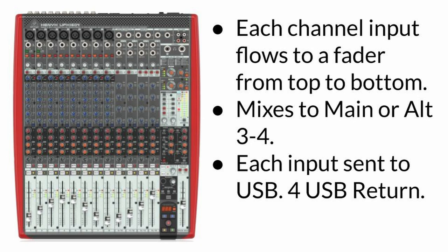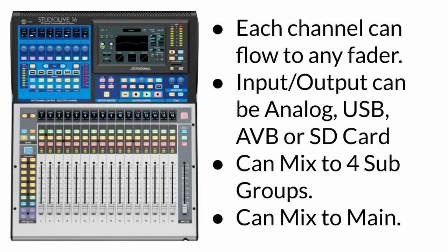Like many analog mixers — for example, the Behringer Xenix UFX 16-04 — audio information flows from the top to the bottom for each channel. From the microphone or instrument input, it flows down to the EQ section, then the auxiliary send section, into the faders, and the faders mix into the main mix. Not so with the StudioLive series. Each input can be sent to any fader, and inputs and outputs can be analog, USB, AVB, or SD card. They can be mixed to four subgroups or two stereo subgroups, as well as to the main mix.